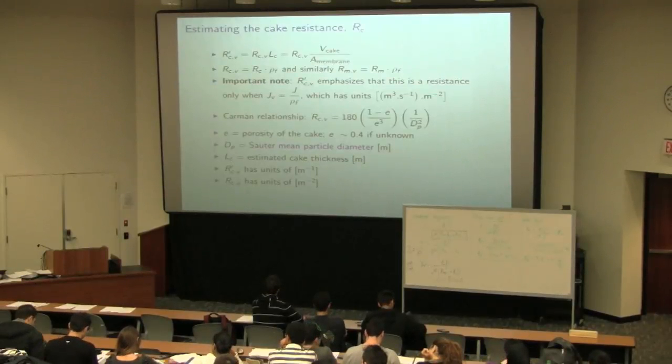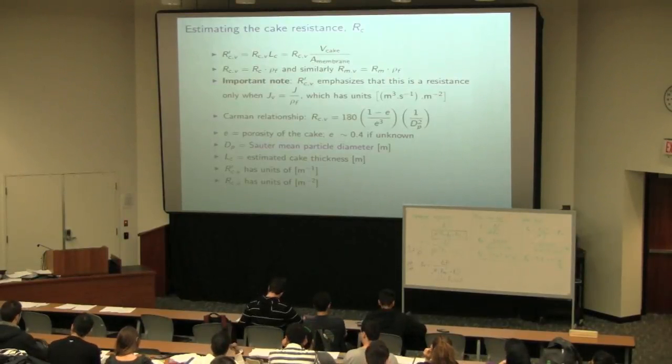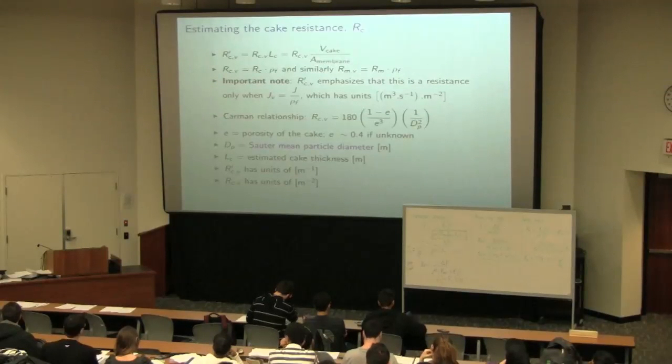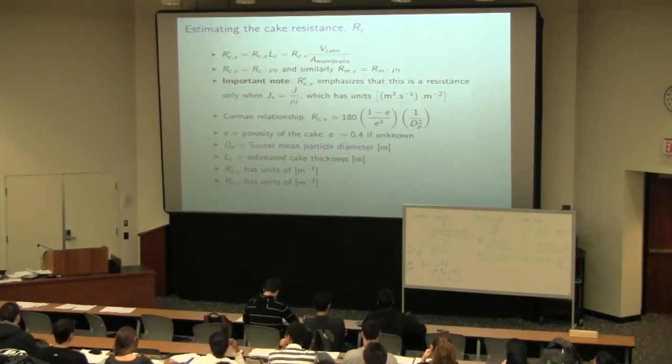So even for non-spherical particles, it's a bit messy, but we can calculate the DP to use in that Carman relationship. The Carman relationship also requires that we have an estimate of the porosity or the openness of the cake, if you want to see it that way. If you're assuming spheres that are packed fairly tightly, the reasonable value is 0.4.